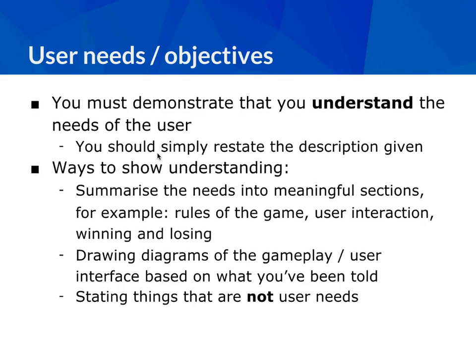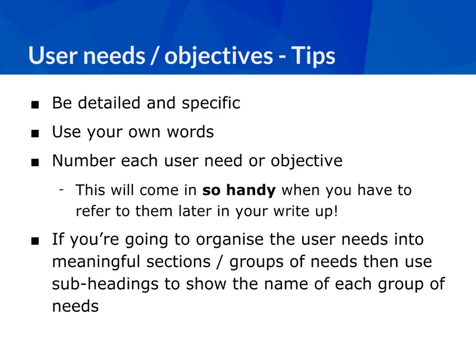There are lots of ways to show understanding. The most important thing is you're processing the information you've been given and throwing it back at the reader saying: this is what I need to do and I understand it. Some tips: be really detailed and specific, use your own words, and number each of your user needs or objectives — this will be really useful later when you need to explain how a particular part of your program meets your user requirements. If you organise your user needs into meaningful sections, give those sections clear subheadings.